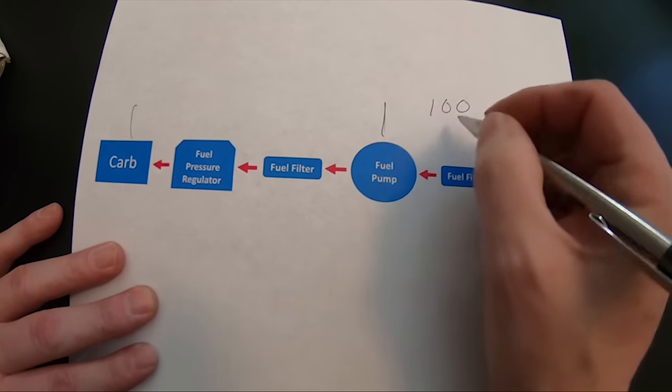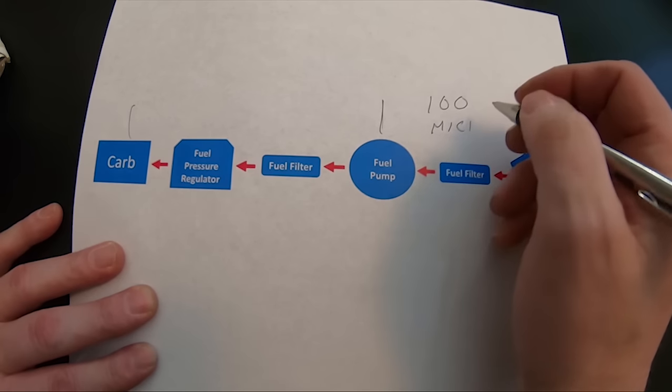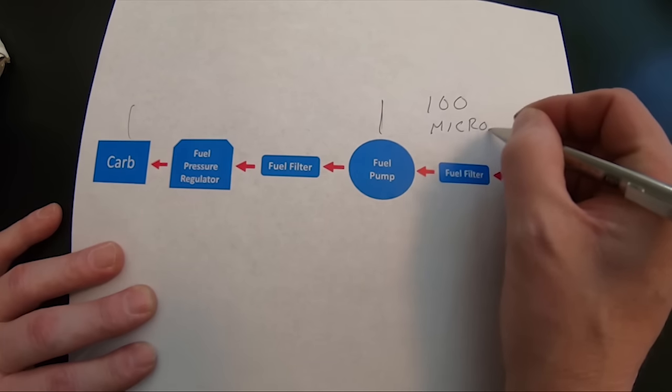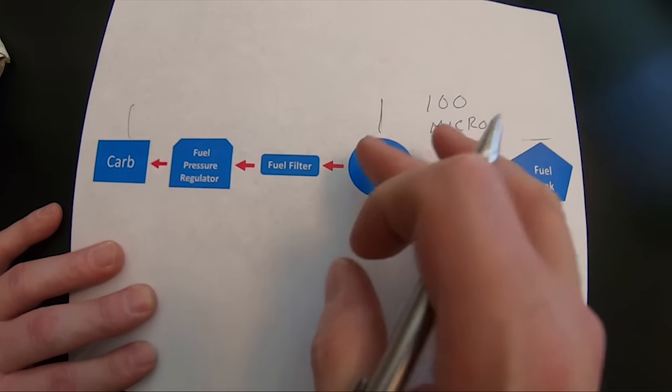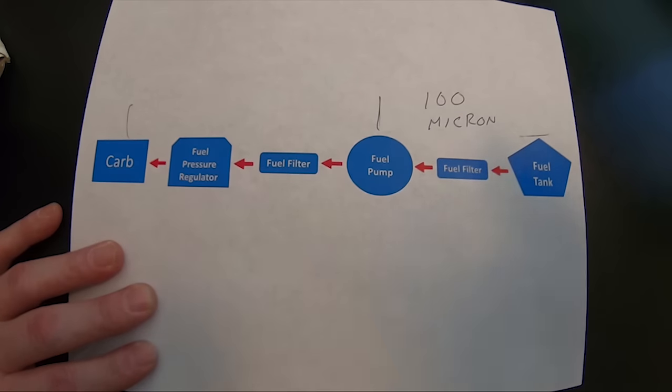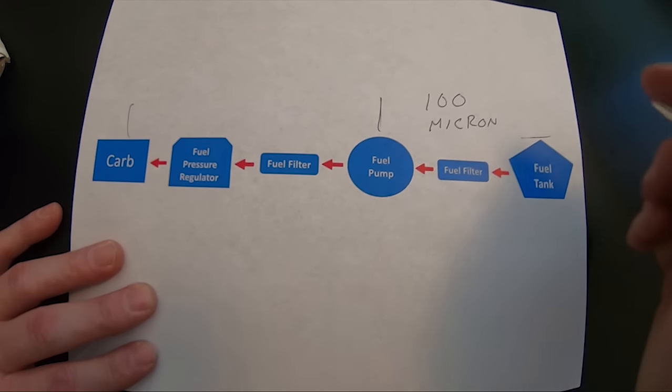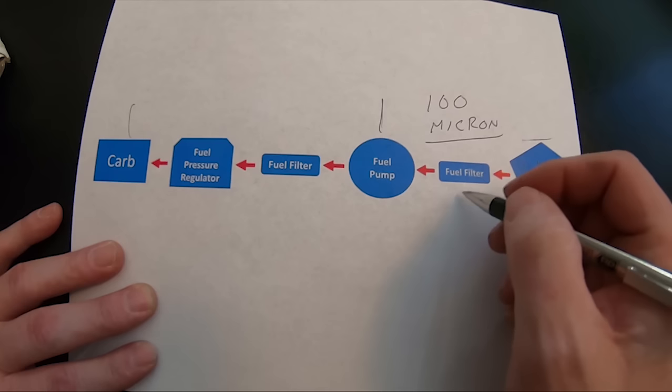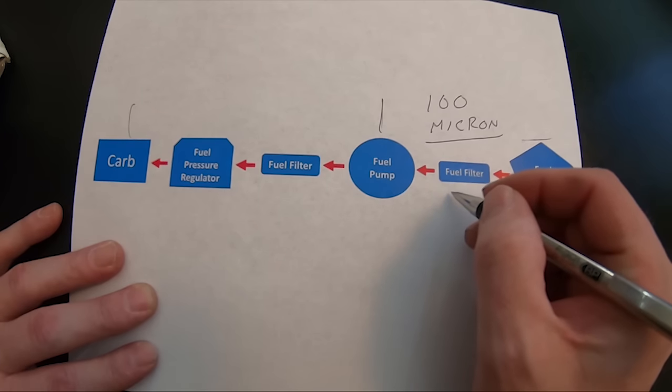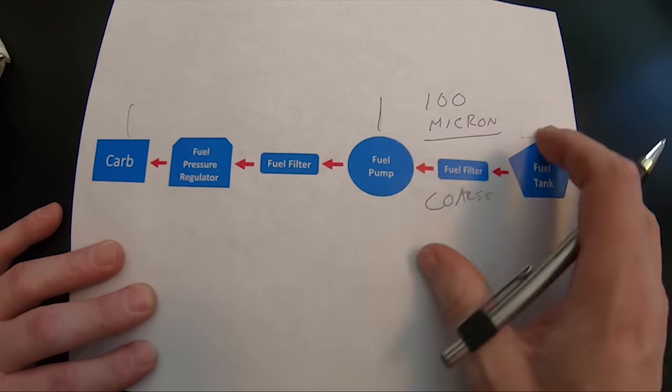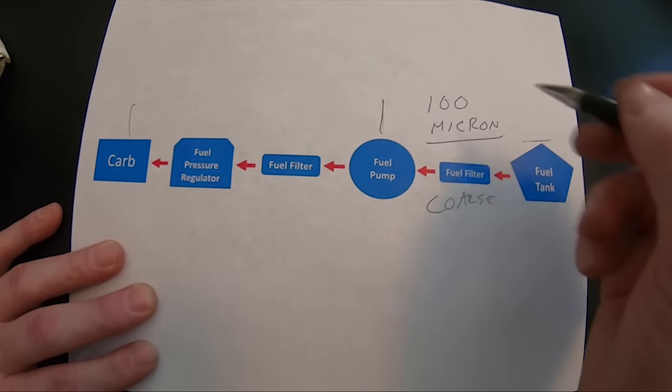So this filter between the fuel tank and the fuel pump needs to be a hundred micron course stainless element. When you have this type of element between the tank and the pump, you'll catch a lot of the big garbage that can be in the fuel system. Now, the older a vehicle is obviously the more potential for trash to be in the fuel tank, the longer it's been around. Hey, it just happens.